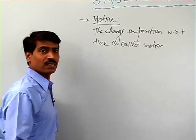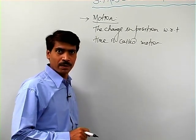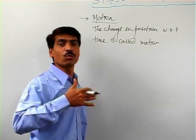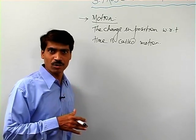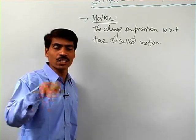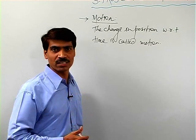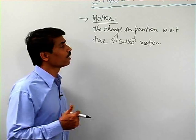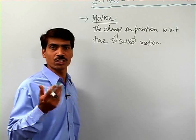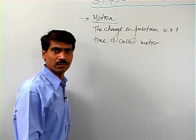Motions are of different types - like motion in a straight line, which is called translatory motion or rectilinear motion. Then there is oscillatory motion - a simple pendulum oscillates about its mean position. There is also vibratory motion, rotational motion, circular motion, and harmonic motion. Out of these, the projectile motion is what we are going to study. So motion is nothing but the change in position with respect to time.